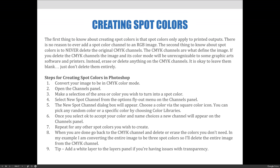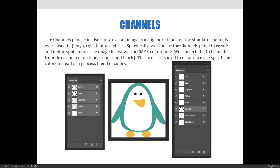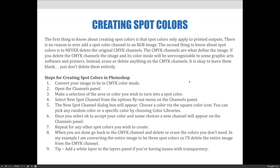The first thing to know about creating spot colors is that spot colors are only applied to printed outputs — there is no reason to ever add a spot color channel to an RGB image. The second thing: never delete the original CMYK channels. The CMYK channels communicate to the file, your graphic art program, and your printer that it is a printing document. Instead, we'll just erase or delete any content on those channels and leave them empty.